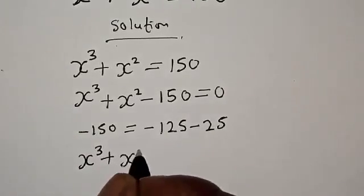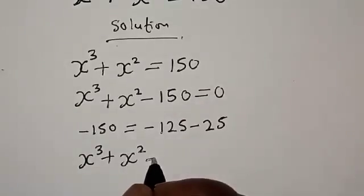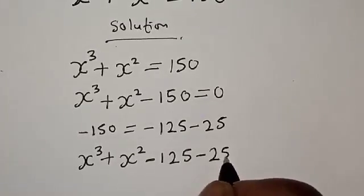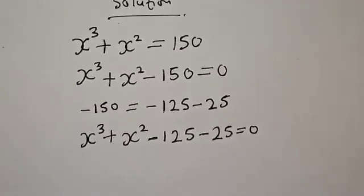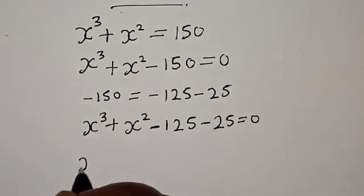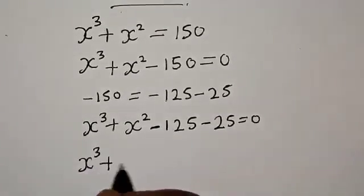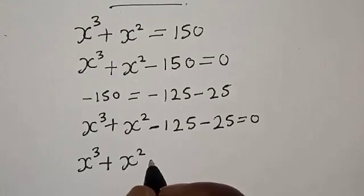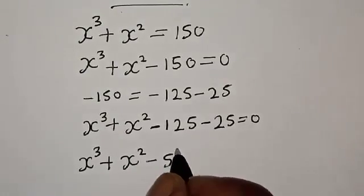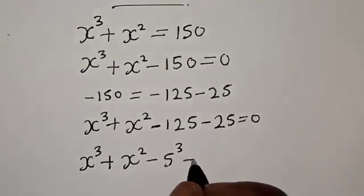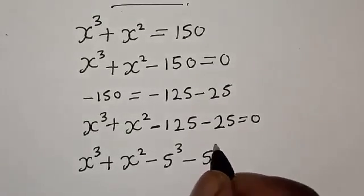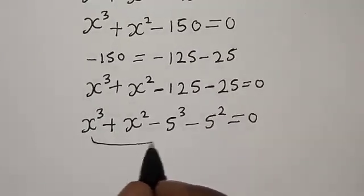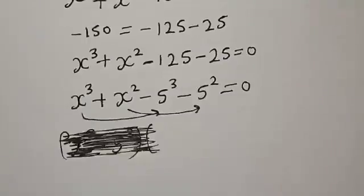So s cubed plus s squared minus 125 minus 25 is equal to 0. Note that 125 is the same as 5 raised to power 3, and 25 is the same as 5 squared. By comparing, we can group these terms accordingly.